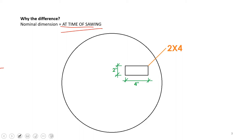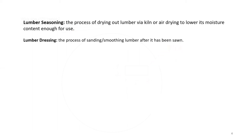Whatever happens to that board afterwards — whatever dimensional changes it undergoes — as long as its cross section doesn't change by re-sawing, any changes due to shrinkage, moisture effects, seasoning, or finishing, it will still remain a 2x4. Seasoning refers to drying the lumber, whether through kiln or air drying. At the time of being cut down, a tree might be approximately two-thirds or more water.